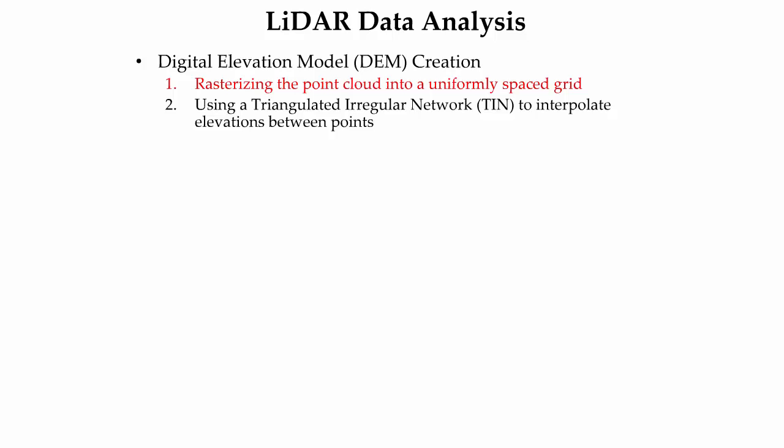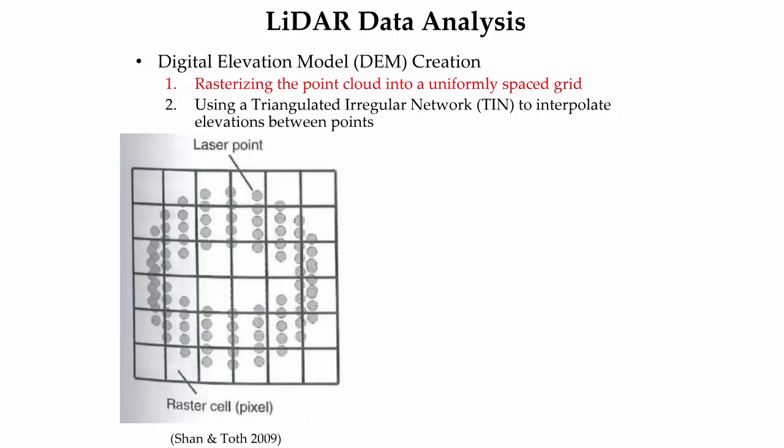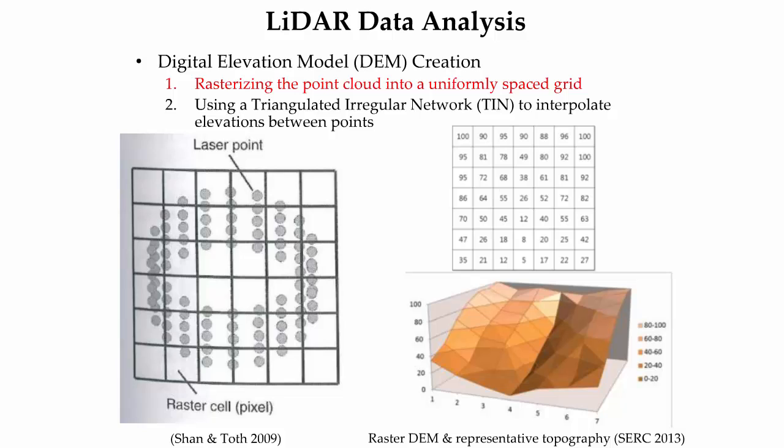Creating LiDAR-derived digital elevation models from non-uniformly distributed LiDAR points can be challenging. There are two primary methods for DEM creation: one, rasterizing the point cloud into a uniformly spaced grid, and two, using a triangulated irregular network, or TIN, to interpolate elevations between points. Data storage, precision, and processing complexity factor into a user's decision for implementing a particular method. As shown in the left figure, a raster grid is overlaid on a series of LiDAR points. Each uniformly spaced grid cell is given an elevation based upon the elevation of the non-uniformly distributed points. The figures on the right show both the raster elevation grid and its three-dimensional visualization.